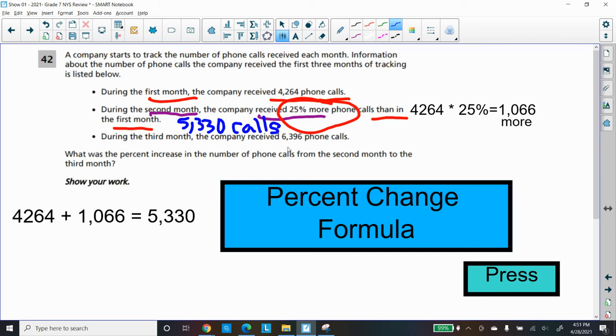During the third month, the company received 6,396 phone calls. Here's our question. Finally, the extended response. What is the percent increase in the number of phone calls from the second month to the third month? So there was a change in the number of calls. It went from the second month of 5,330 to 6,396. So it changed.